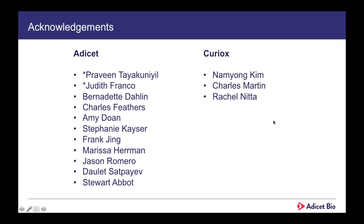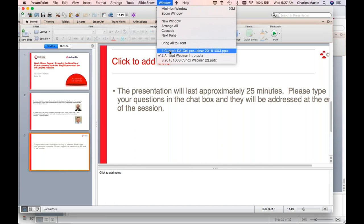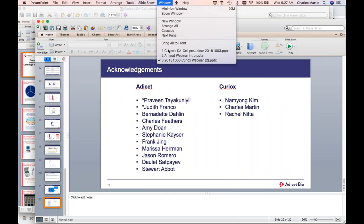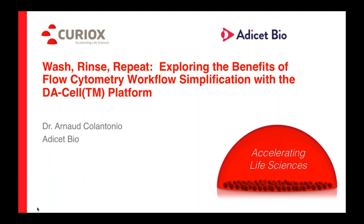Question: For adapting an eight-panel assay to the DA cell system, how long did it take you? The full implementation, after our tech evaluation, took less than a day. Once we received the device, it was as easy as just starting to run the flow with the optimization that we had already done with Curiox. The only thing we had to tweak slightly was the volumes we were using for staining, but that was a very minor change.